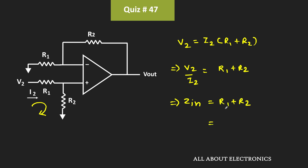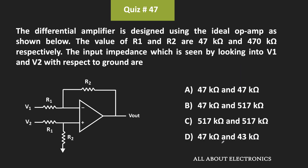Here, R1 is 47 kΩ and R2 is 47 kΩ, so the input impedance seen looking into V2 is equal to 94 kΩ. Therefore, the input impedances seen by looking into sources V1 and V2 are 47 kΩ and 94 kΩ respectively, and this is the correct answer for the given question.